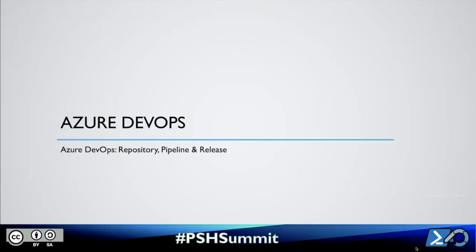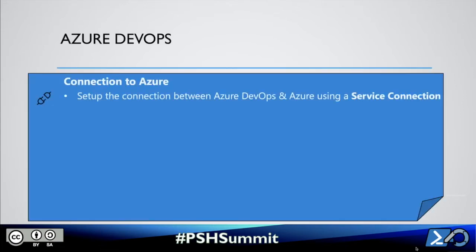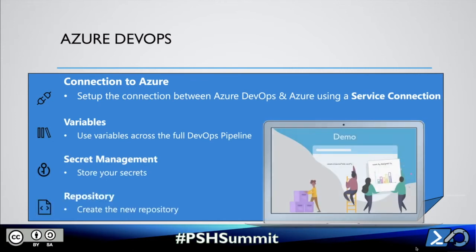On to Azure DevOps. Many of the things that Michał mentioned are already available in Azure DevOps. As with his demo, we'll take a look at how we can create a connection to Azure through a service connection. After creating a new repository, we will set up a very bare bones pipeline that is able to connect to an Azure Key Vault to retrieve a secret. But most of these things are very similar to how it is done in GitHub Actions. Let's take a look.